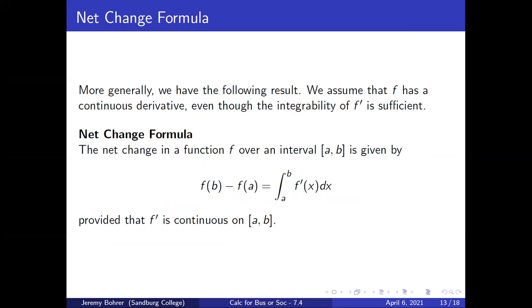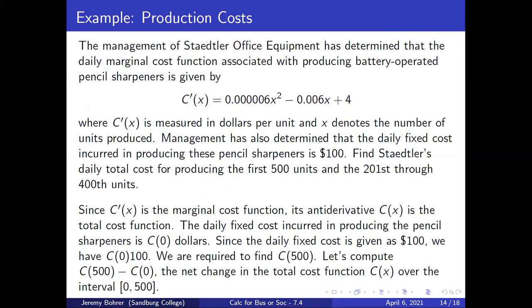More generally, we have the following result — the net change formula. The net change in a function f over a closed interval [a, b] is given by f(b) − f(a) = the integral from a to b of f'(x) dx, provided that f' is continuous on the closed interval [a, b].